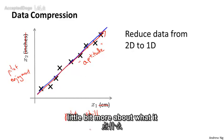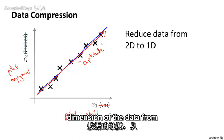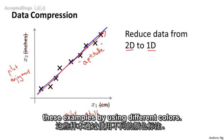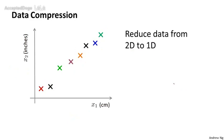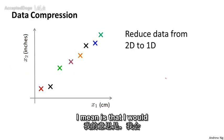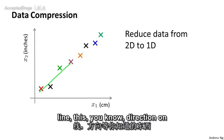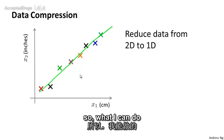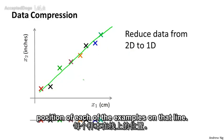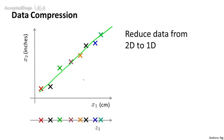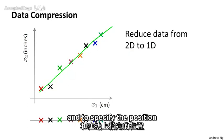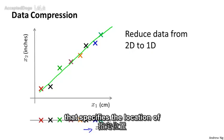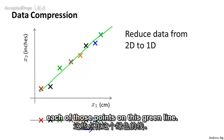Let me say a little bit more about what it really means to reduce the dimension of the data from two dimensions — from 2D to 1D. By reducing the dimension, what I mean is that I would like to find maybe this line, this direction on which most of the data seems to lie, and project all the data onto that line. By doing so, I can measure the position of each of the examples on that line. I can come up with a new feature, z1. To specify the position on the line, I need only one number. So z1 is a new feature that specifies the location of each of those points on this green line.